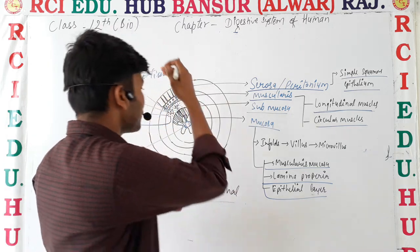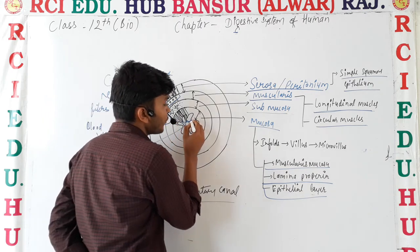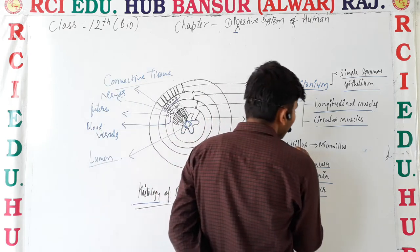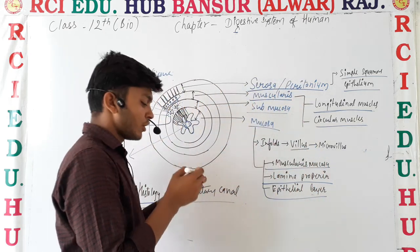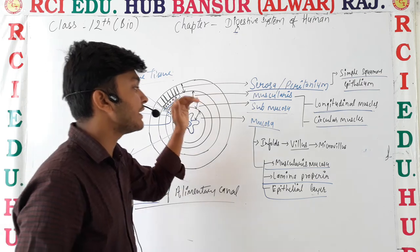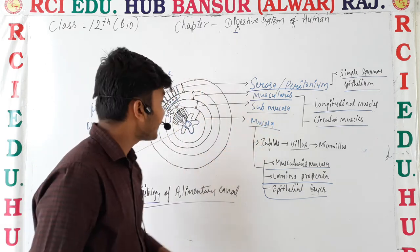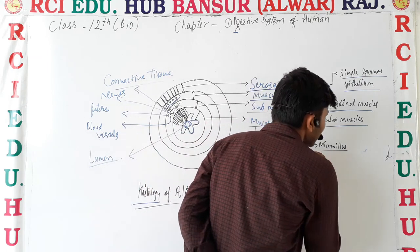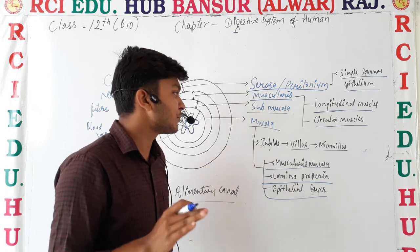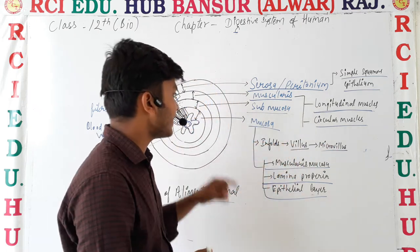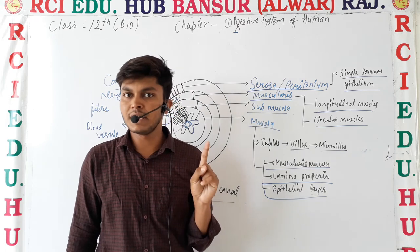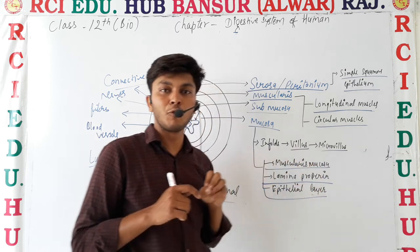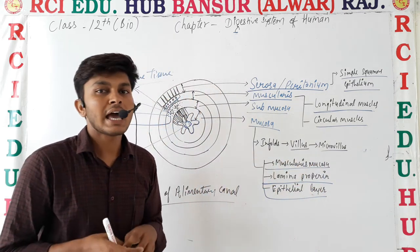As food continues to travel, you will see some infolds. These infolds are known as villi. They are made of the innermost layer, that is the mucosa. There are also small structures called microvilli. Their main functions are: number one, increasing surface area, and number two, they are helpful in the absorption of food.